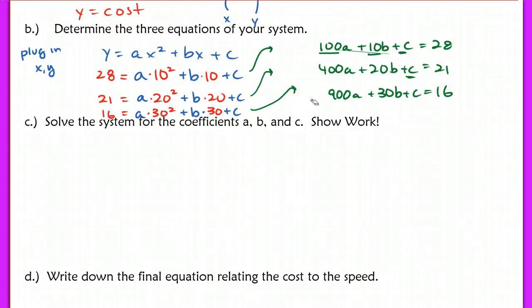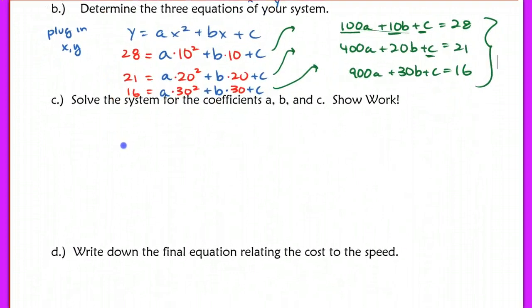Simplifying this equation, I end up with 16 equals 900a plus 30b plus c. What I actually did already for the first two lines is I stuck the number out in front, that 28. I put it at the end of the equation just because I think we're used to seeing the variables first and then equaling a number because that's how you want to enter it also into your calculator.